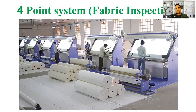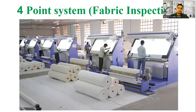There are various defects in the fabric: holes in the fabric, stains, hairiness, and yarn missing. If you have any defects, they can be found and assessed in the 4-Point System.